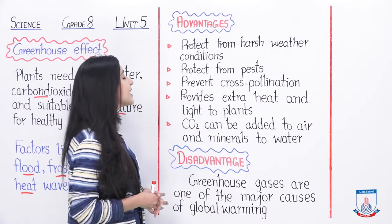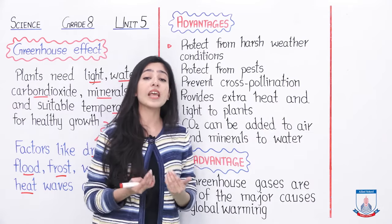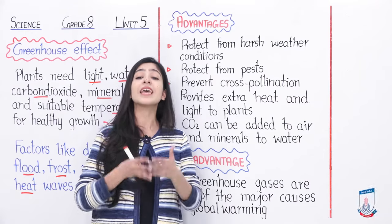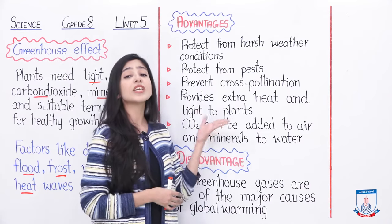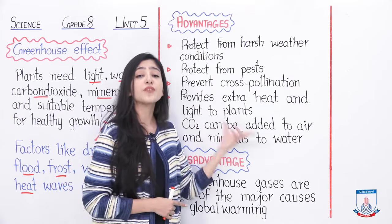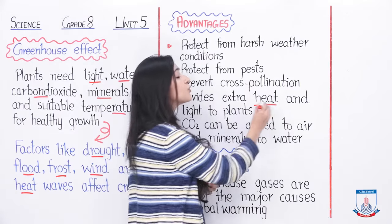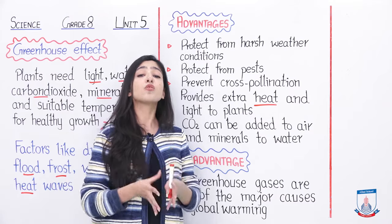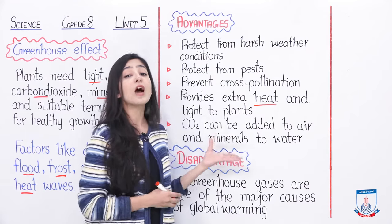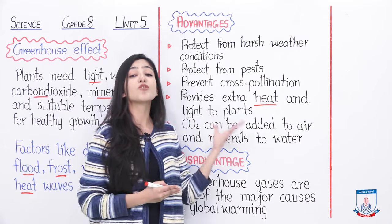Fourth, the greenhouse provides extra heat and light to plants. Plants require heat and light, and in this enclosed area we can give them as much as needed. For photosynthesis, plants need red light and blue light, which we can supply from artificial sources. In terms of heat, if a place is in a colder region and we want to grow crops that need a warm environment, we can use a greenhouse to maintain warmer conditions so those crops can also grow.